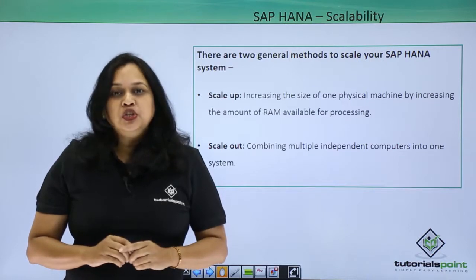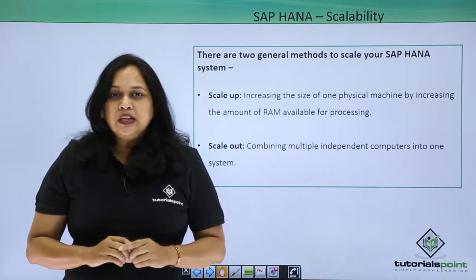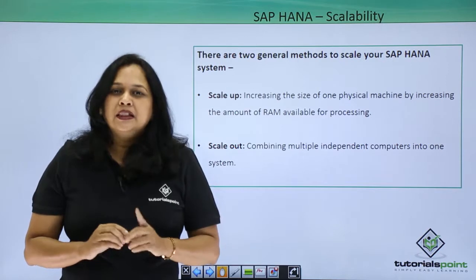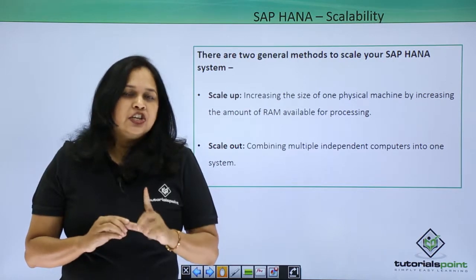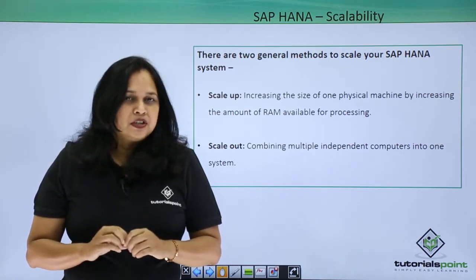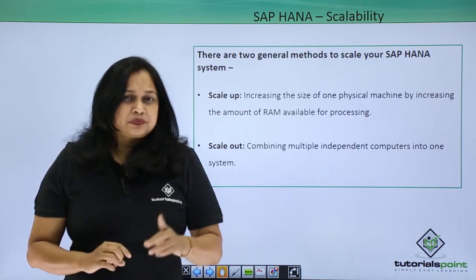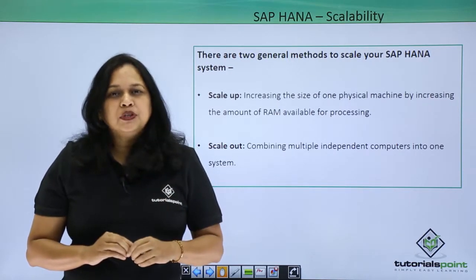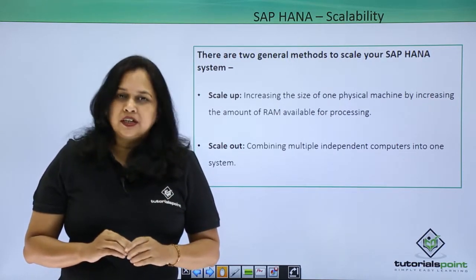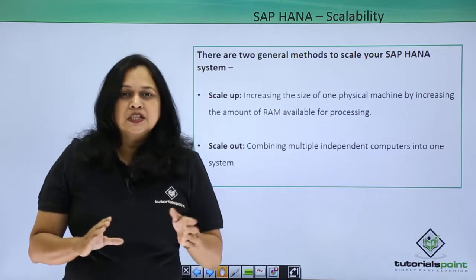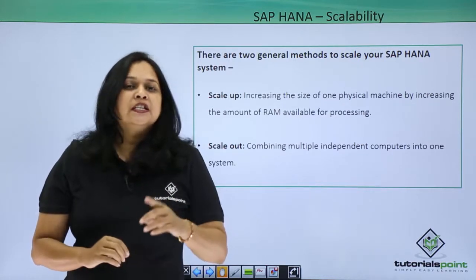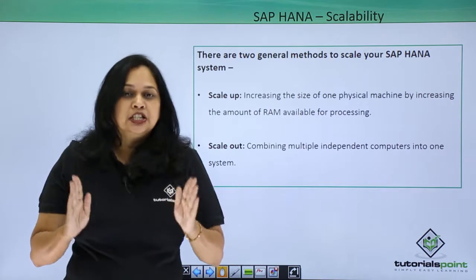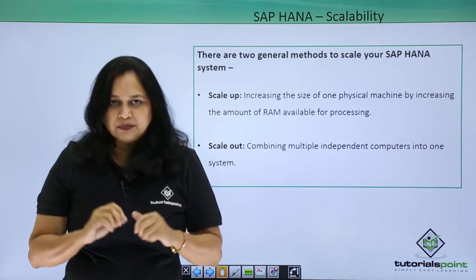One technique you can use to deal with planned data growth is to purchase more physical RAM than is initially required, set the allocation limits according to your needs, and then increase it over time to adapt to your data. Once you have reached the physical limits of a single server, you can scale out over multiple machines to create a distributed SAP HANA system.